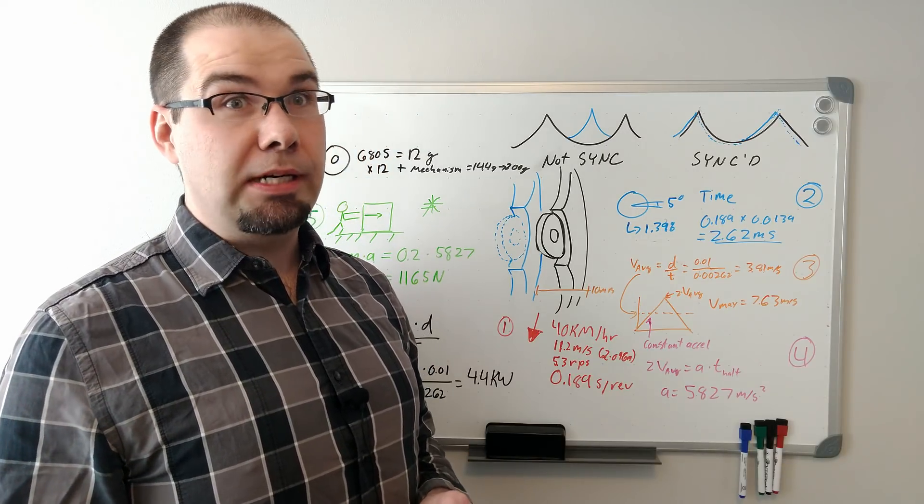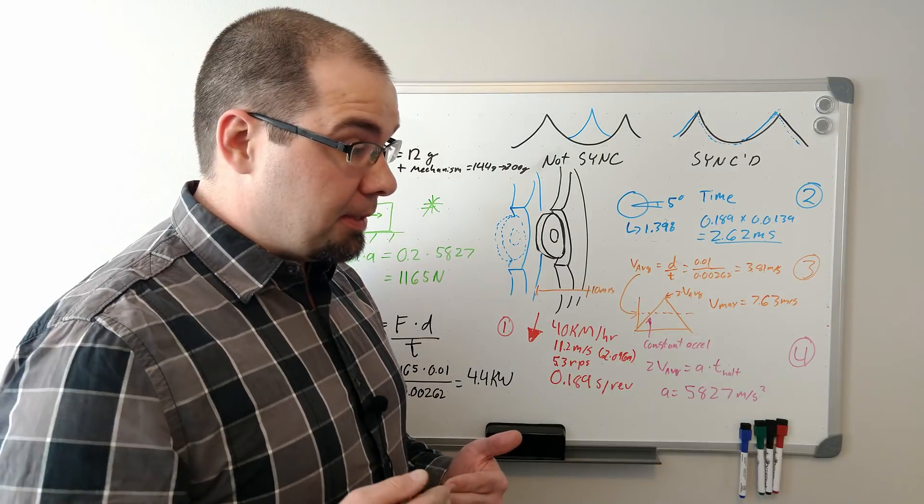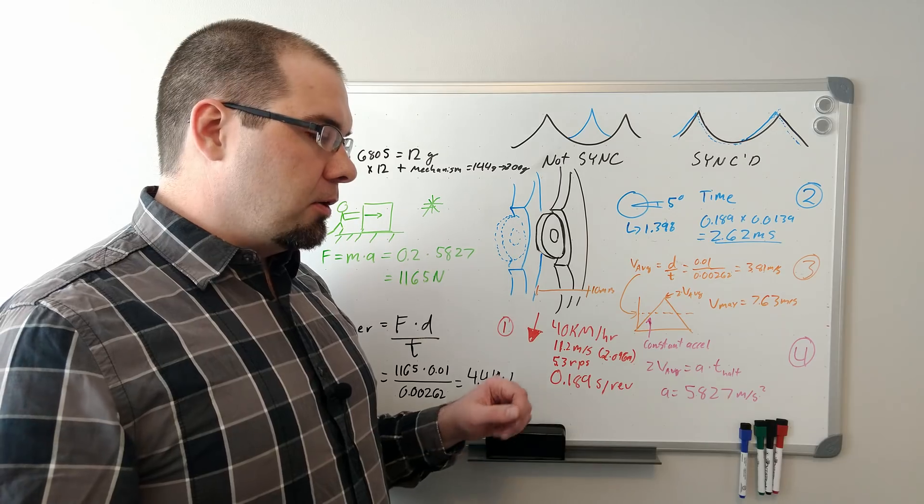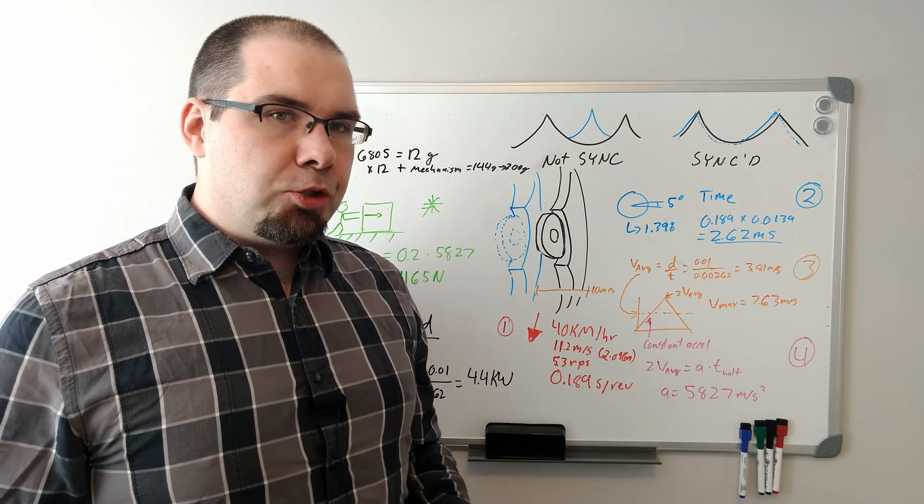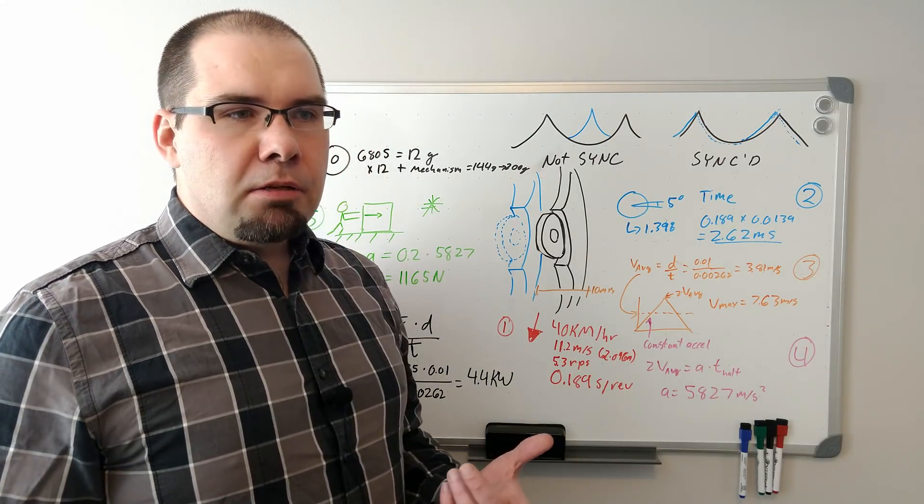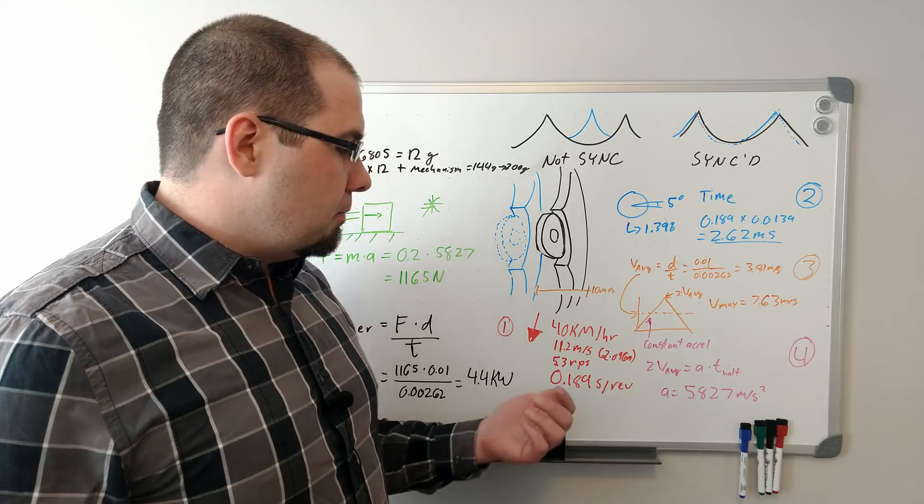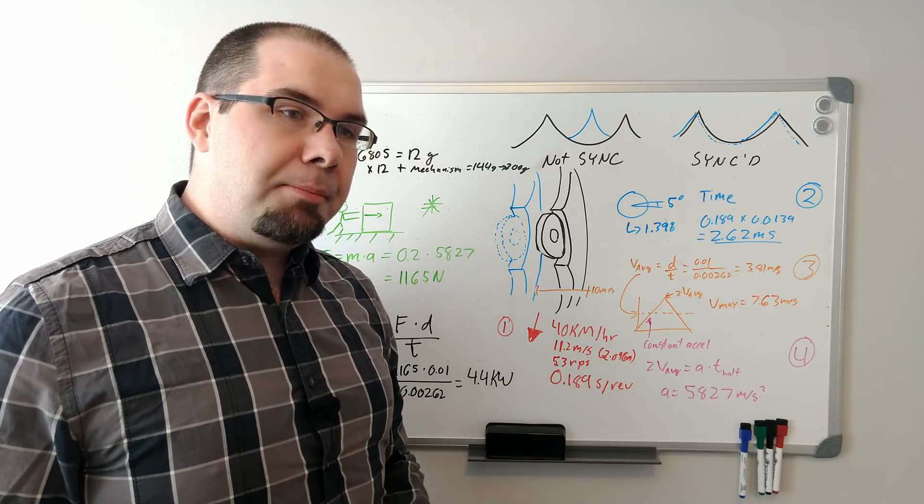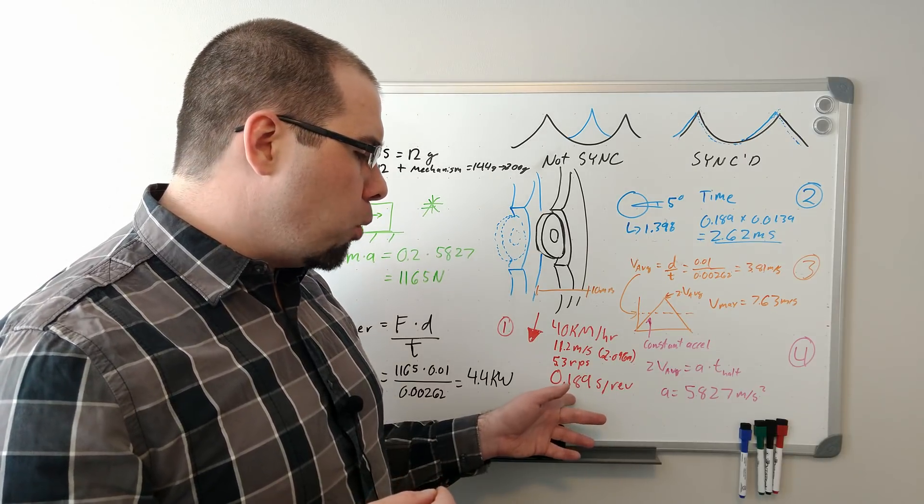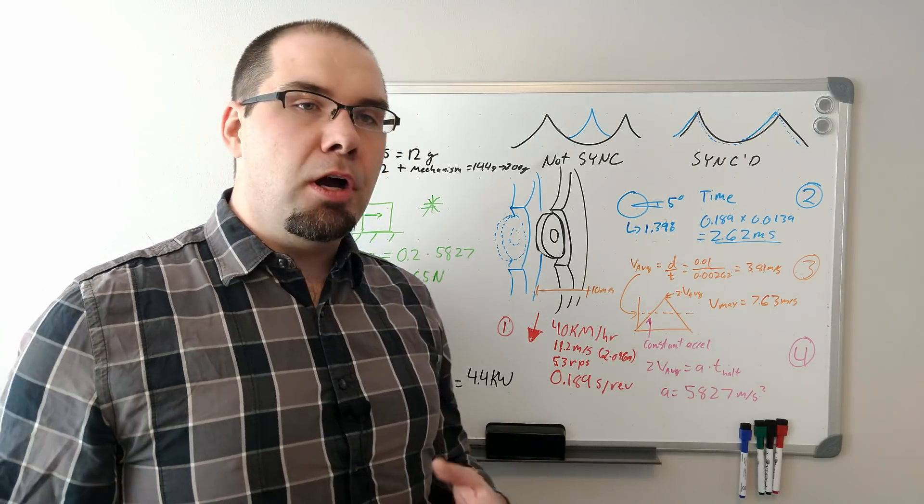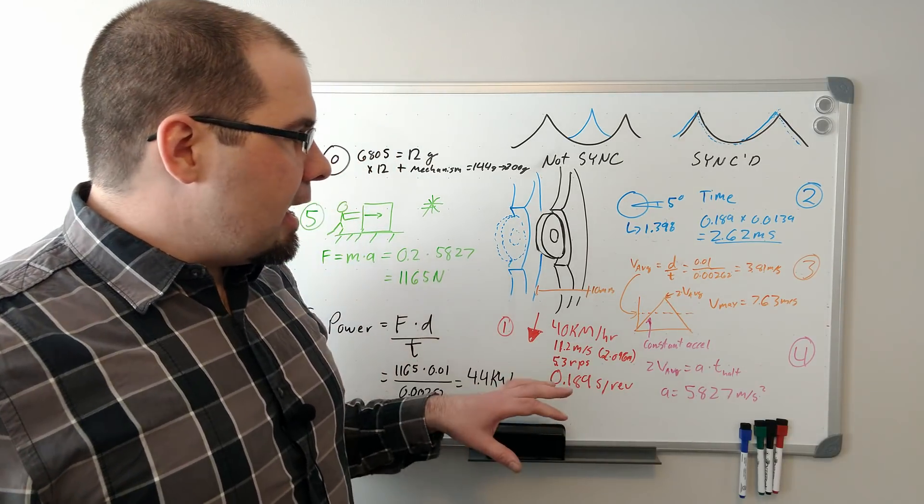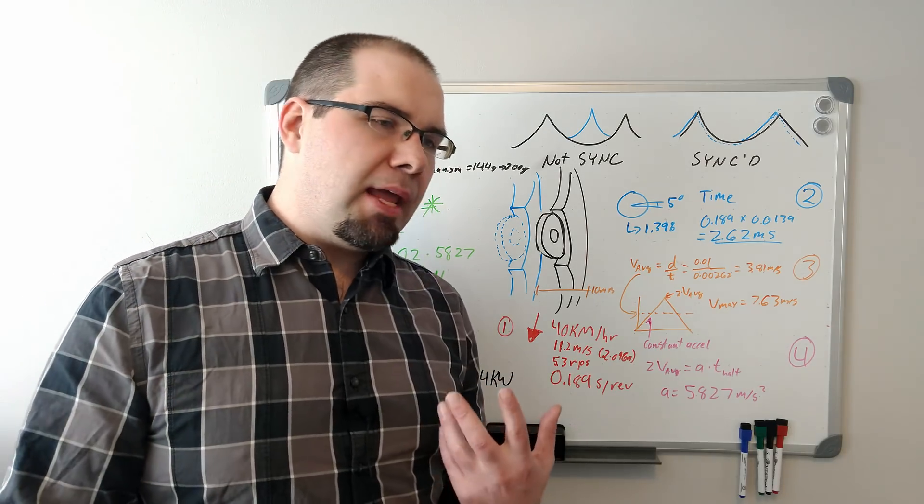So let's take a fairly easy scenario: shifting at 40 kilometers an hour. This is not even excessively hard. The faster we go, if we went to 60, it's one and a half times faster. Actually, it's cumulatively built so it actually keeps getting much harder. So 40 kilometers an hour, you're going 11.2 meters per second in forward distance. That means with a fairly average 700c wheel, you're about 5.3 revolutions per second. That means your wheel is rotating in 0.189 or 189 milliseconds.